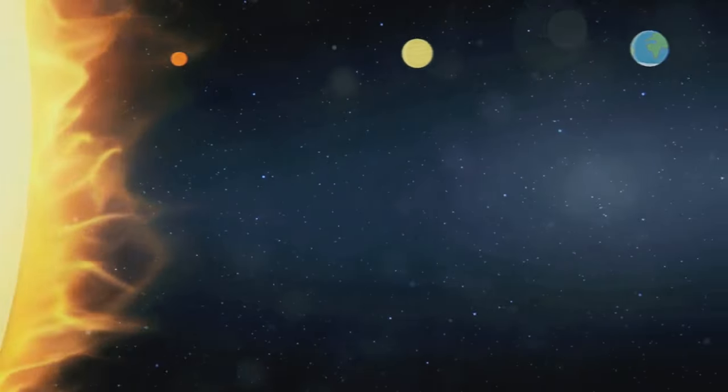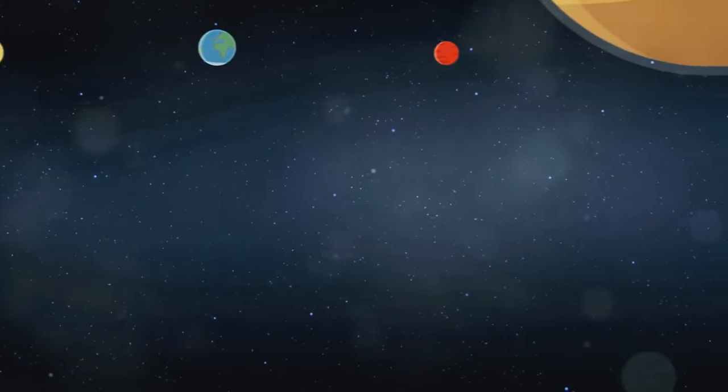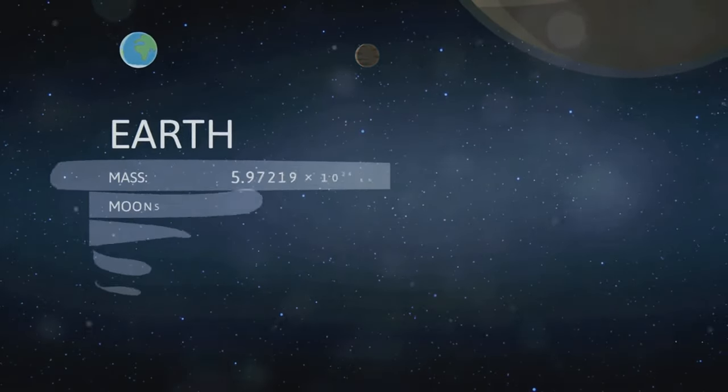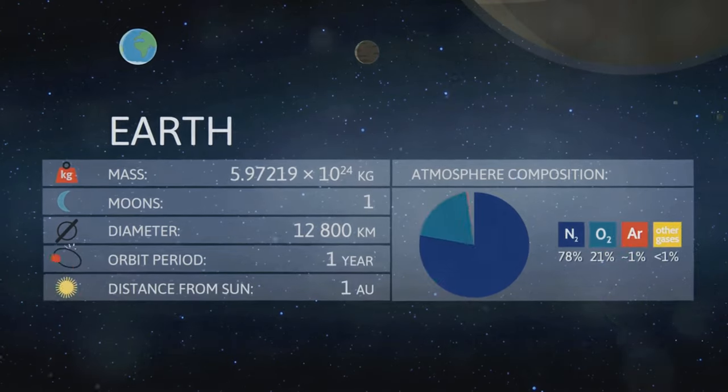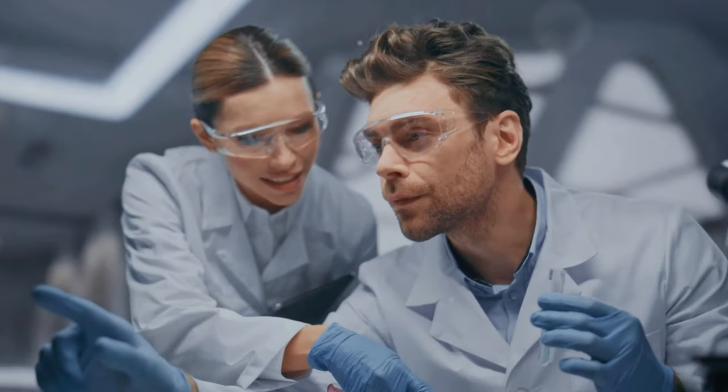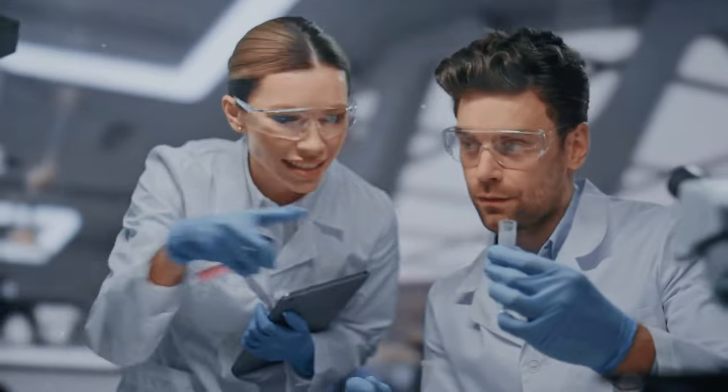We've always been told that oxygen suddenly appeared in the atmosphere around 2.7 billion years ago, marking the beginning of complex life forms. But what if this narrative is incomplete, and there's more to the story?